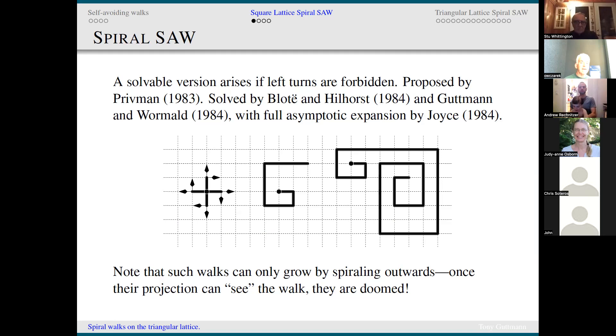A very clever idea was proposed by Vladimir Privman in 1983, in which he said, why don't we simplify the problem by saying that, at least on the square lattice, you're only allowed to go straight ahead or make a right-hand turn. You can't turn left. Unfortunately, he attempted to solve that problem by generating some series, assuming they grow like mu to the N, N to the G, which they don't, and proceeded to try and solve it that way, which gave totally misleading results.